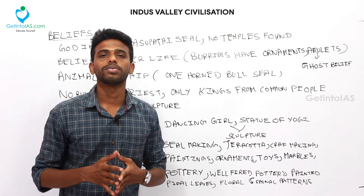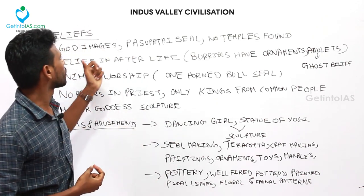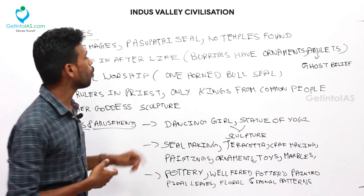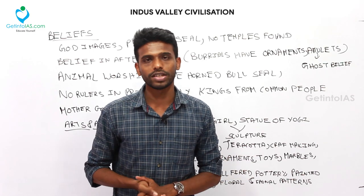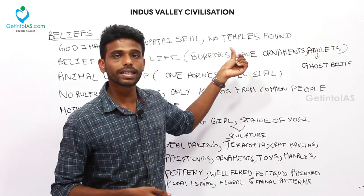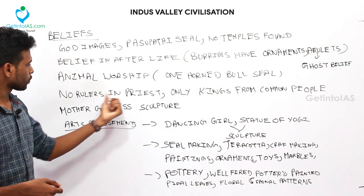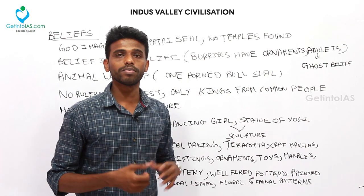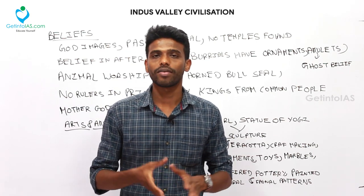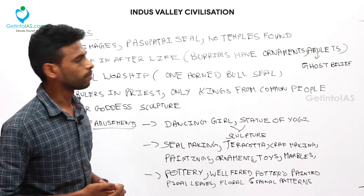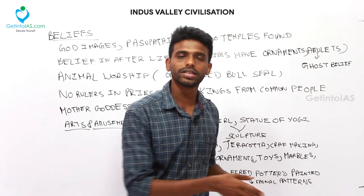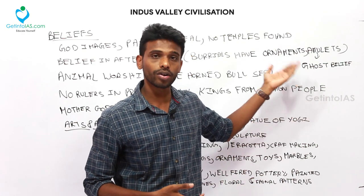A Pashupati seal was found by archaeologists, indicating that people believed in Lord Shiva. Importantly, no temples were found in the Harappan Civilization, which indicates the absence of a priest ruling class — kings likely came from common people. The uniformity in their organization and trade system confirms ruling authorities existed. Burials containing ornaments indicate that people believed in afterlife.